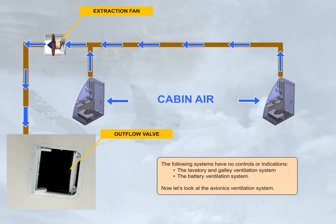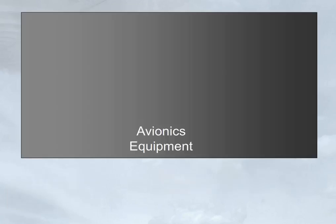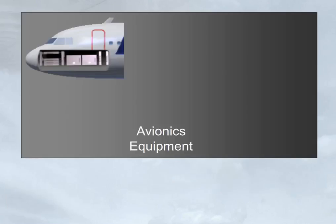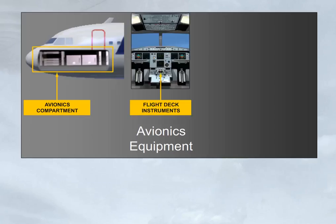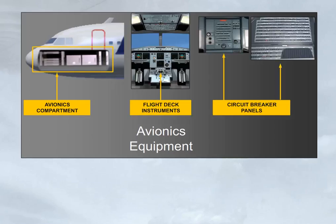Now let's look at the avionics ventilation system. The avionics ventilation system provides cooling air for the avionics equipment. This equipment includes the avionics compartment, the flight deck instruments, and the circuit breaker panels. Let's now look at how the system works.